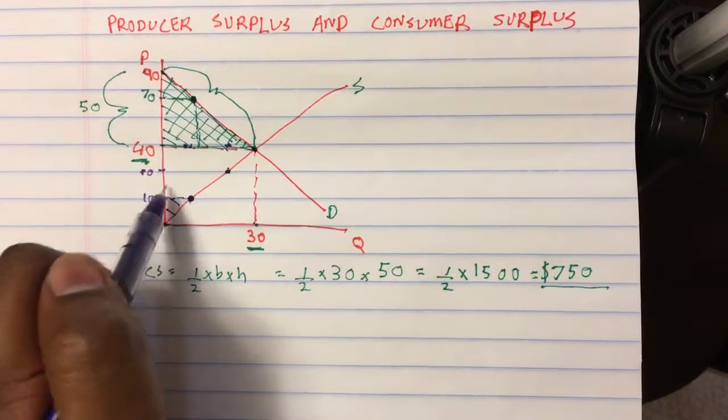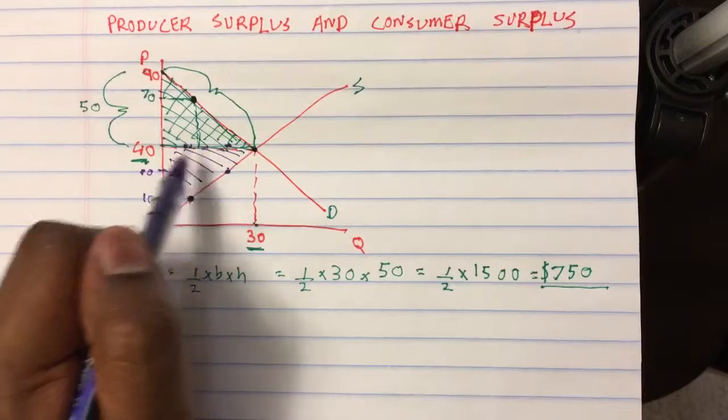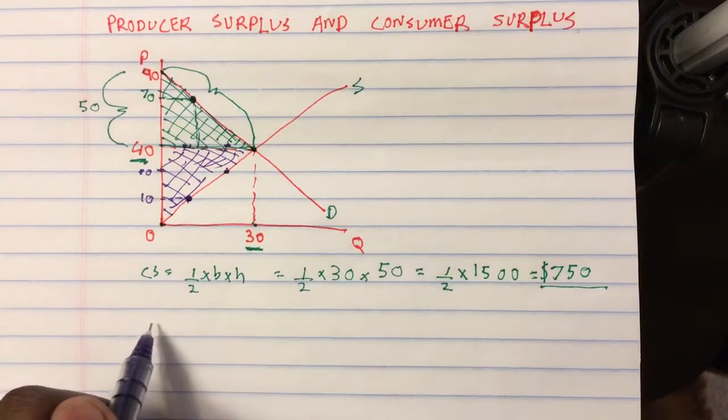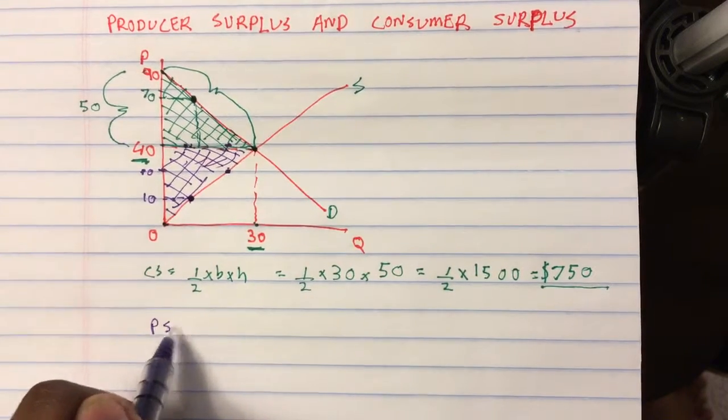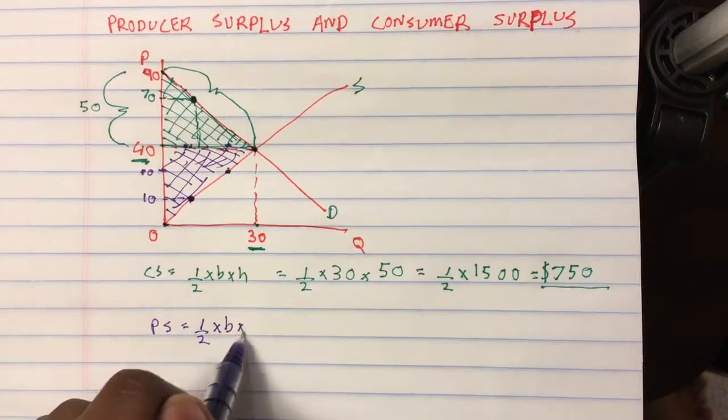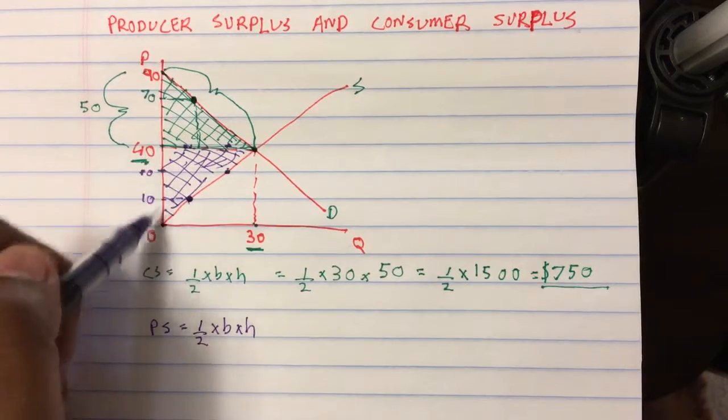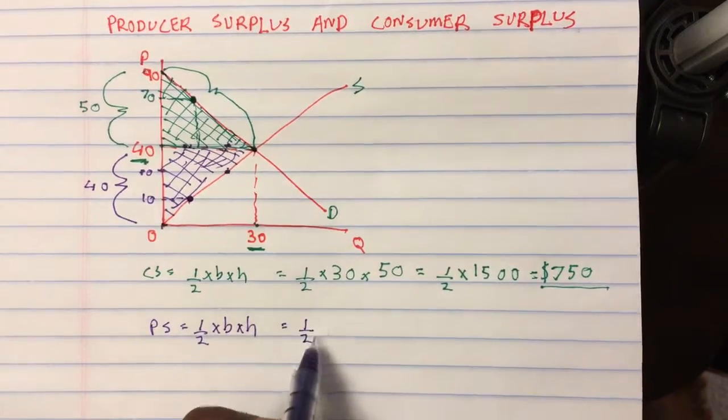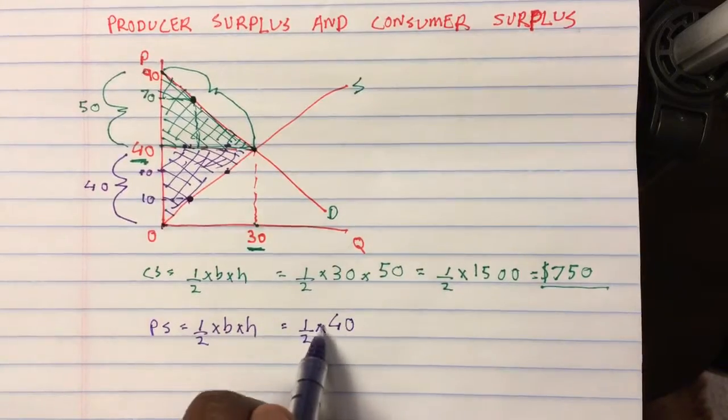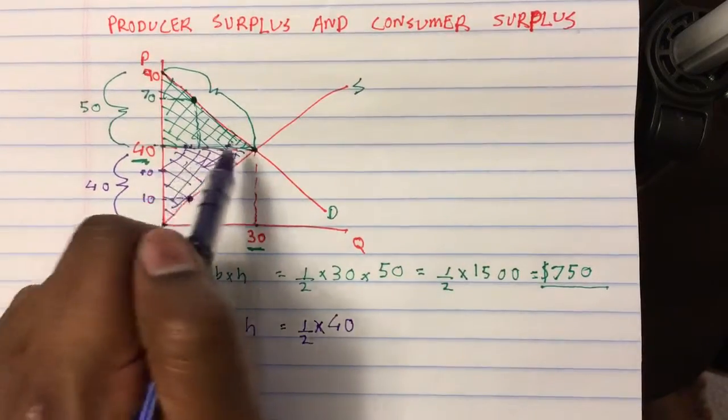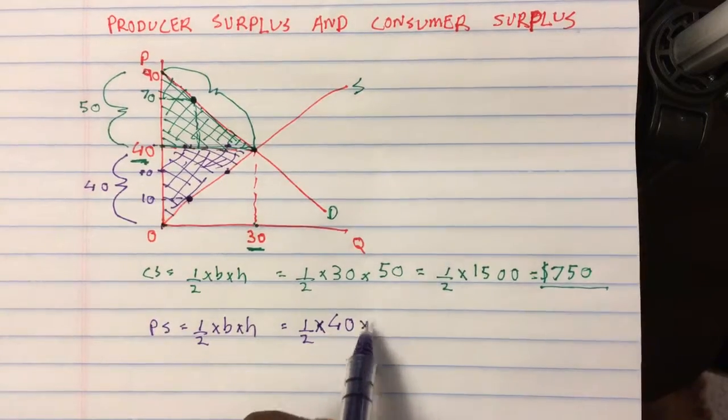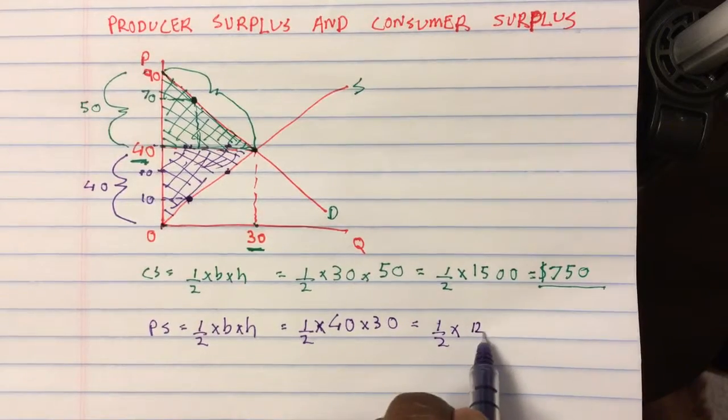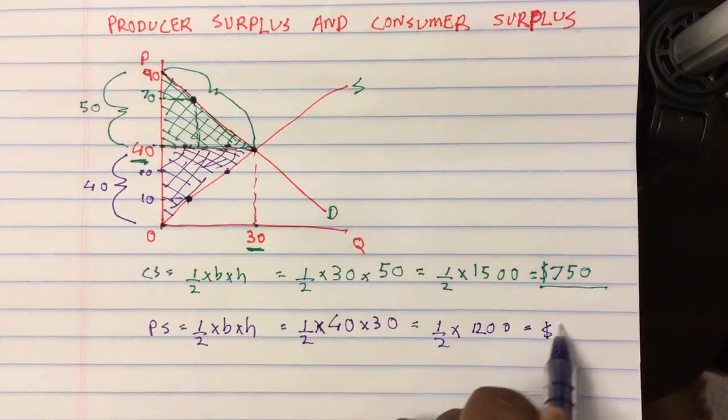So the total profit in the industry is the area of this triangle. So again, we're doing the same idea. We have producer surplus, which is half times base times height. Let's take this to be the base, which is 40. So half times 40. My height is this length, which is 30 times 30, which equals half times 1200, which comes out to $600.